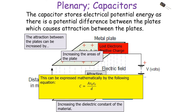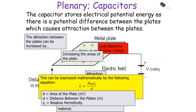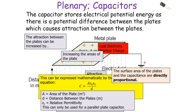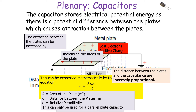This can be expressed mathematically by the following equation: capacitance equals the area of the plates multiplied by the permittivity of free space multiplied by the relative permittivity, divided by the distance between the two plates — C = Aε₀εᵣ/d. Area is in metres squared and distance is in metres, but this equation can only be used for a parallel plate capacitor. This tells us that surface area and capacitance are directly proportional, while the distance between the plates and the capacitance are inversely proportional.